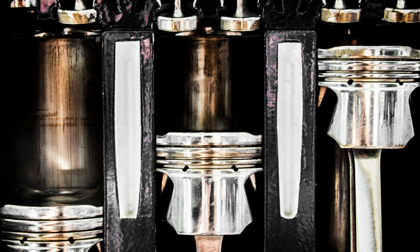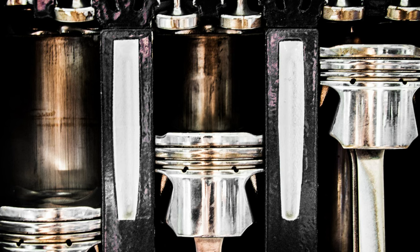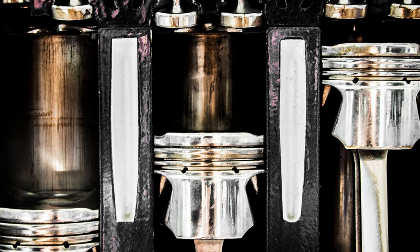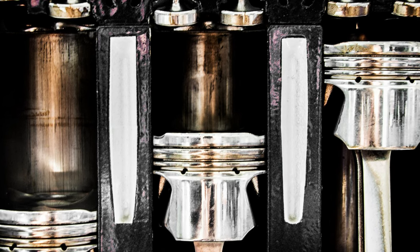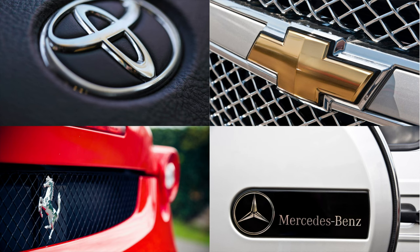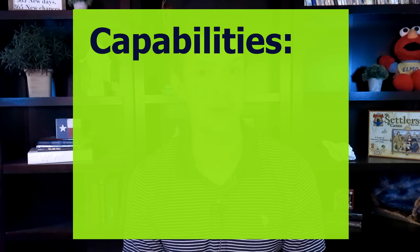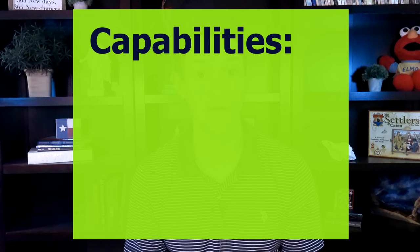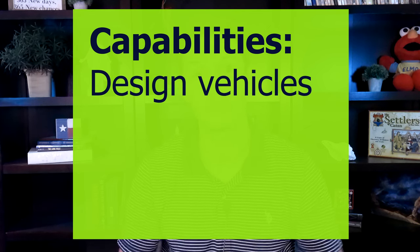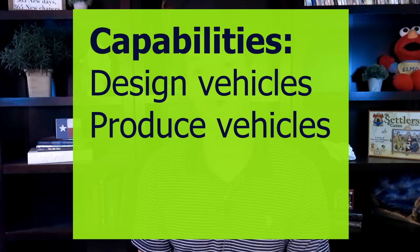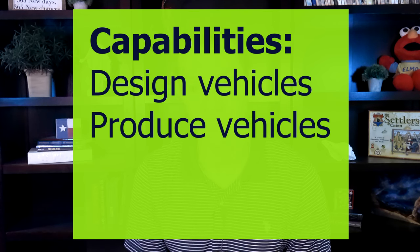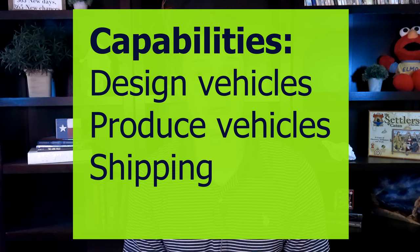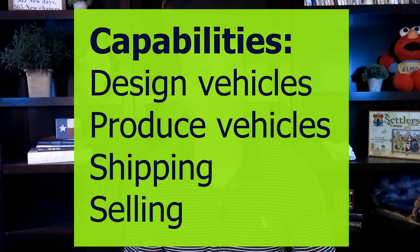Intangible resources for an auto manufacturer include engineering knowledge — how do you design a car that will work and that people will want to buy? Then there is production knowledge: now that it's been designed, you have to have people who know how to execute those designs. And certainly the brand name — when people are shopping for cars, there are some brands they go to before others, and that brand is a valuable intangible resource. Capabilities include using that knowledge combined with the equipment to actually produce the car, and the ability to ship and sell those vehicles.